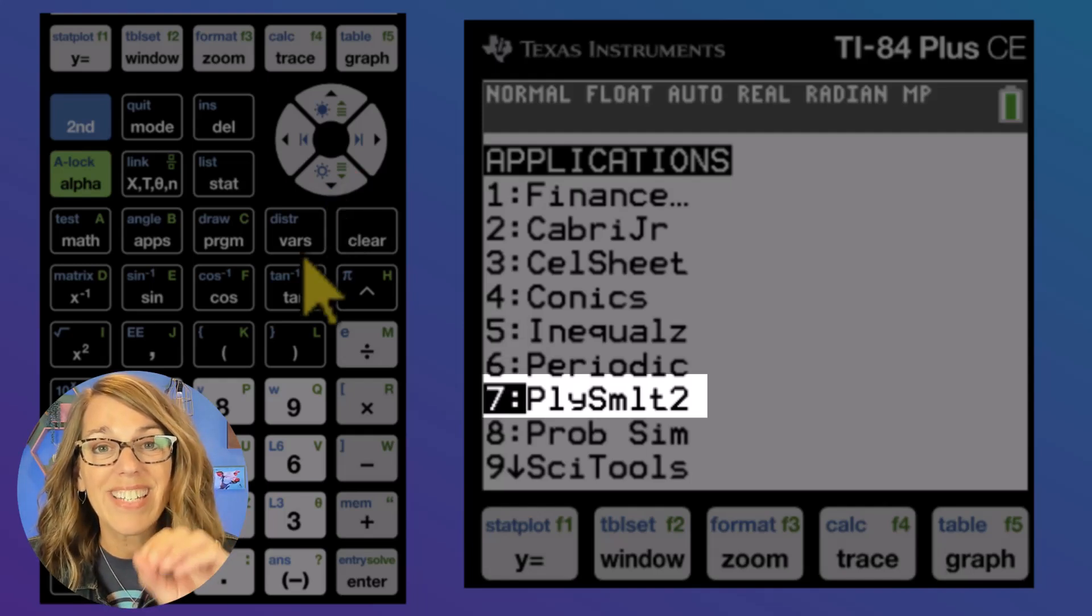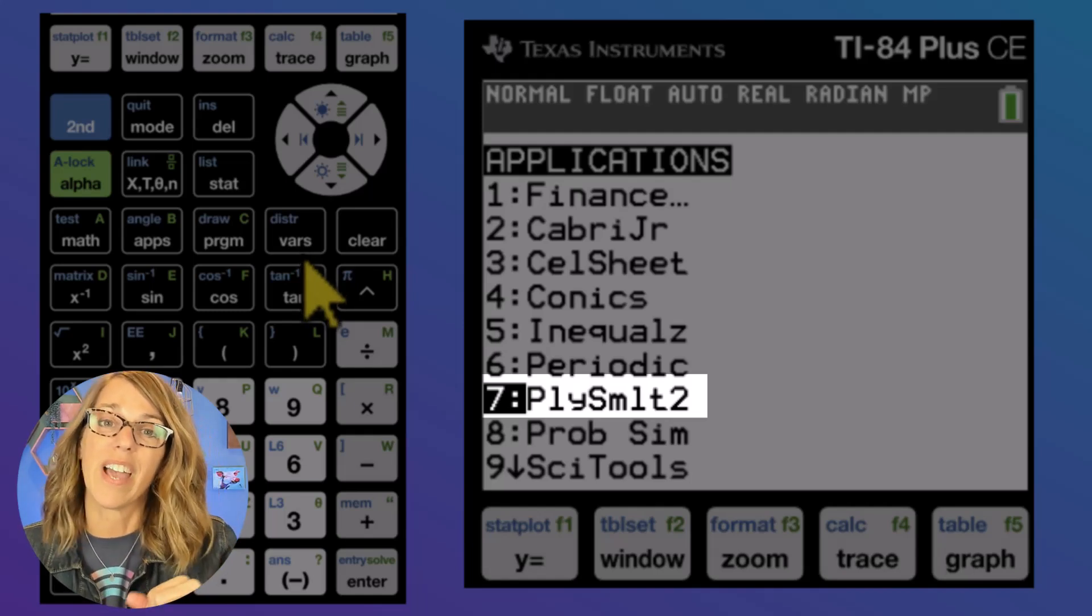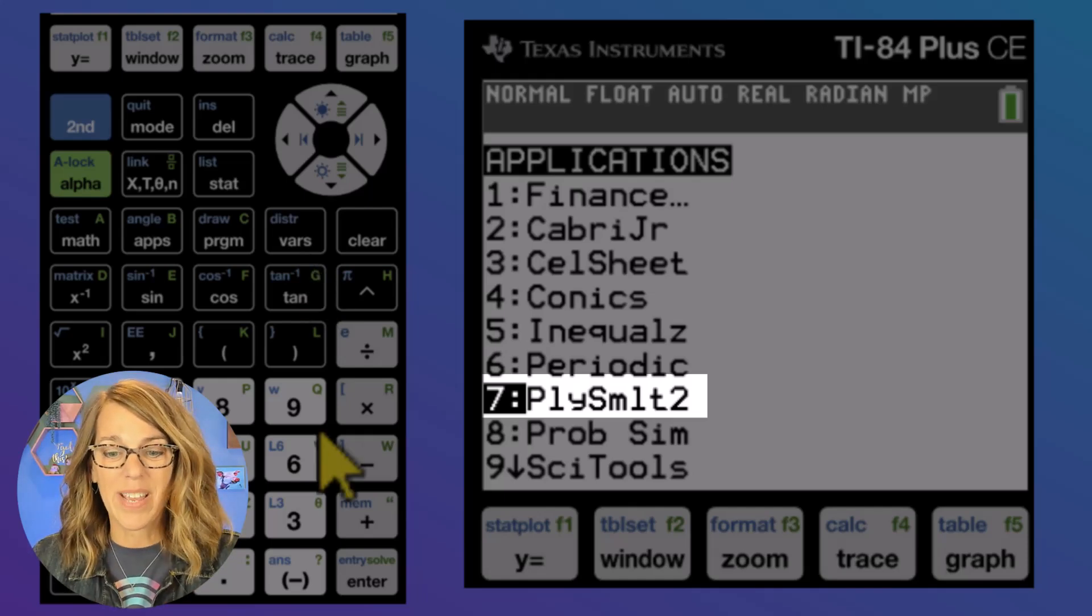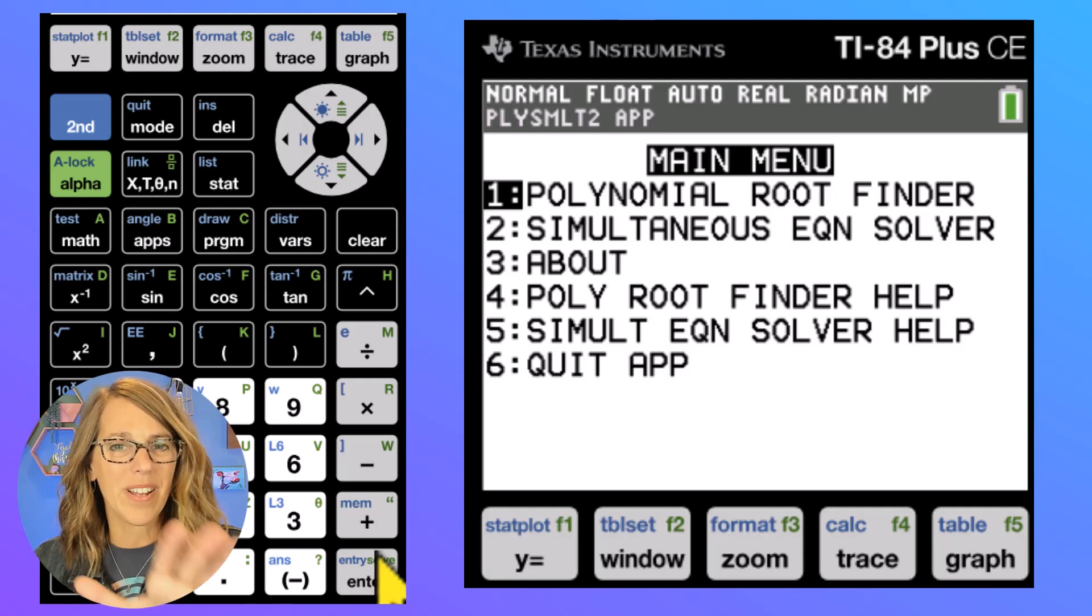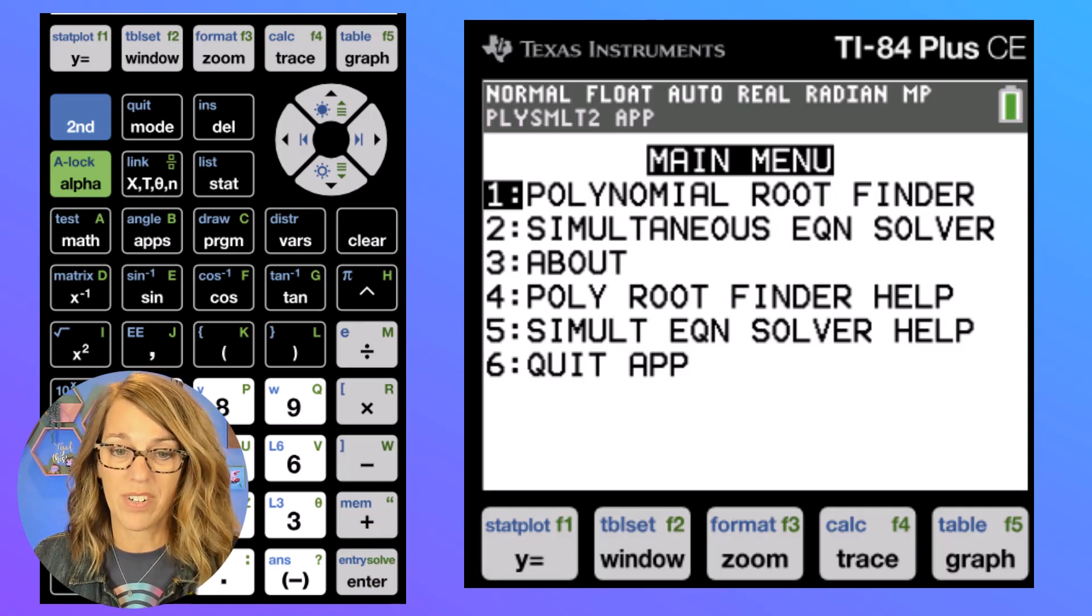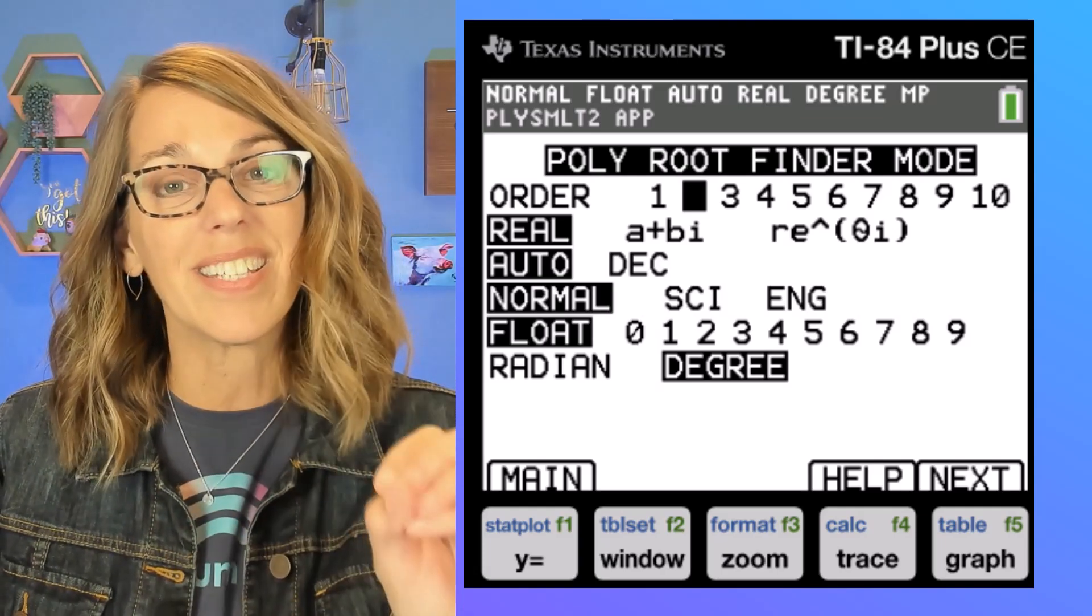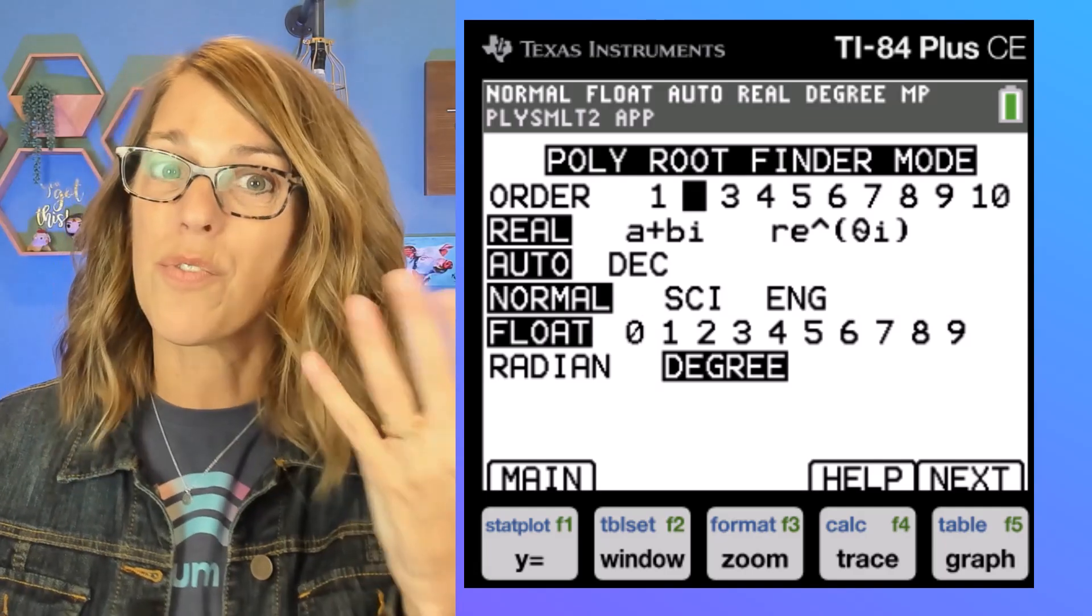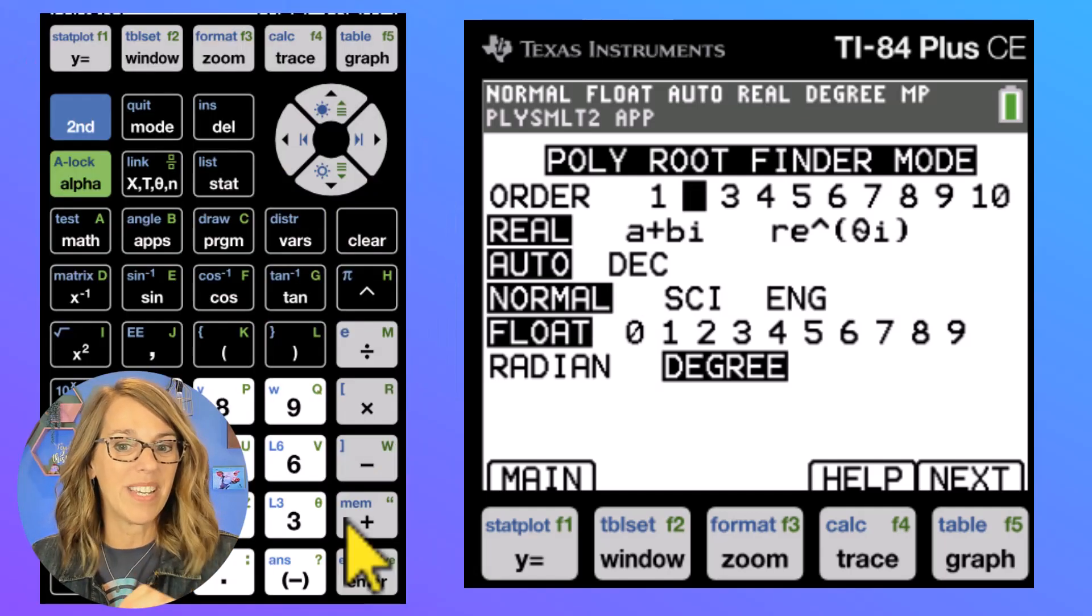Now, if for some reason your calculator doesn't have it on here, I'm going to put a link in the description down below so you can learn how to update your calculator. But mine does. So I am going to hit enter to choose this. So I've got two different options here. The other ones are just some help options. We want the polynomial root finder. So I'm going to hit number one. A polynomial root finder means that you've got an equation set equal to zero that you're solving. So you're solving for roots. Graphically, those would be x-intercepts. Our polynomial happens to be degree two. So it's going to be a degree two.